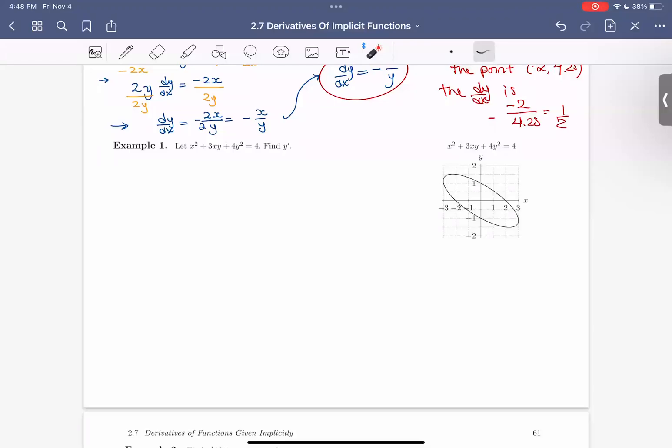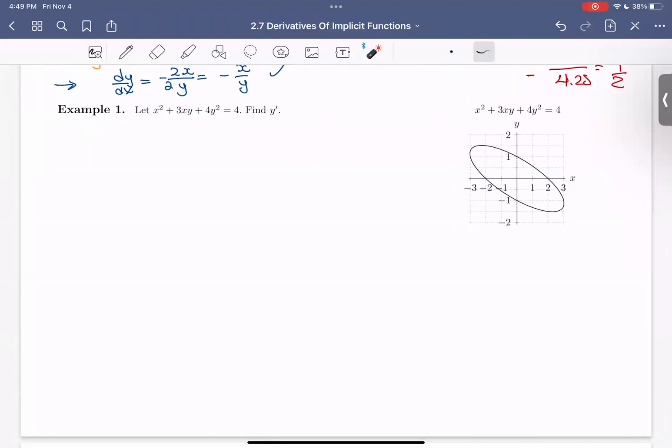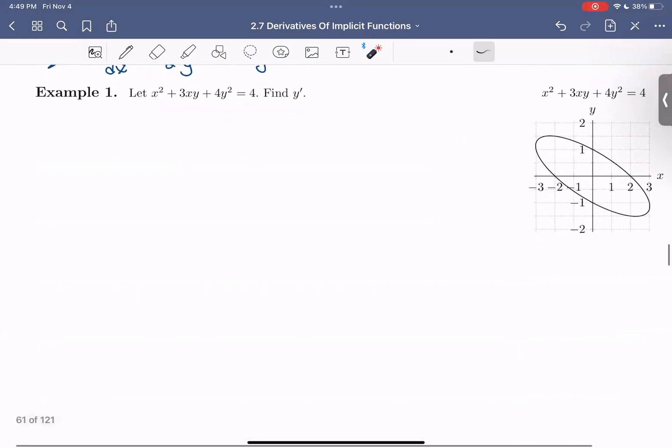Hello everyone. In this video, we're going to look at example one in our 2.7 notes on derivatives of implicit functions. So in this example, we are given an implicitly defined function, and we see its graph on the right here.